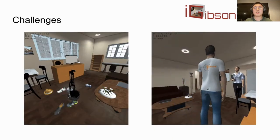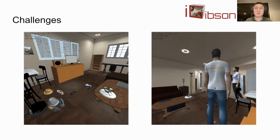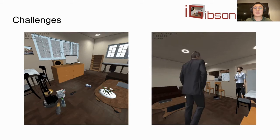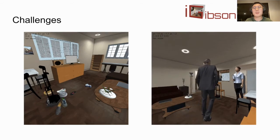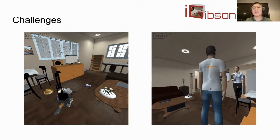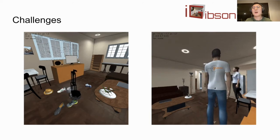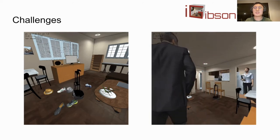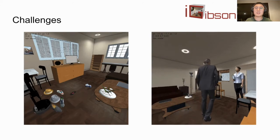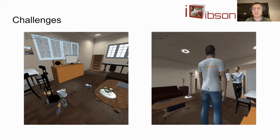Therefore, this year we want our challenge to focus on navigation in dynamic environments. On the left-hand side, you can see an example of the robot interacting with dynamic objects such as furniture, shoes, hats, and toys that can be pushed around by the robot based on physics simulation. On the right-hand side, you can see an example of the robot interacting with dynamic agents — in this case, simulated pedestrians with predefined trajectories.